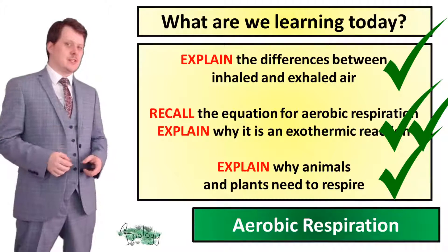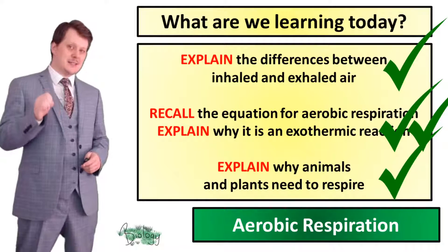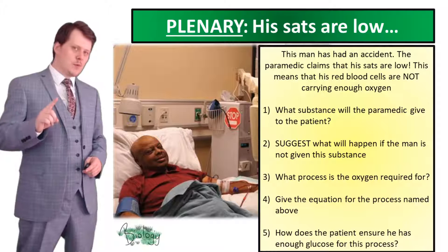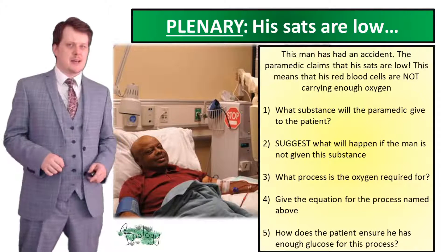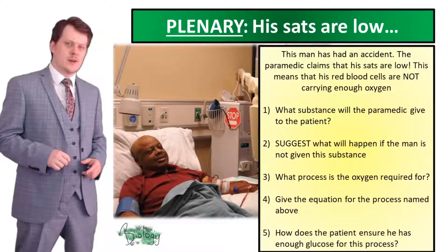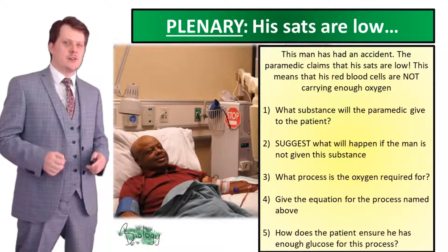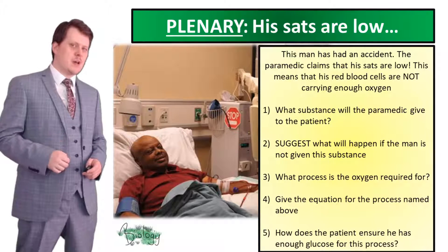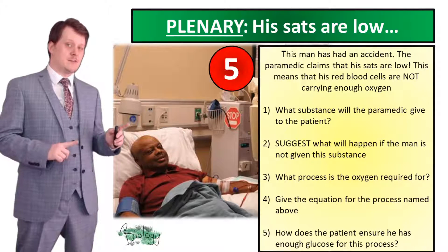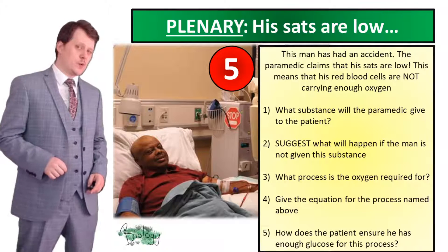So now we have further studied the equation for aerobic respiration and can state exactly where those two reactants come from. We've got one more thing to do before we wrap up. This man has had an accident and the paramedic claims that his sats are low, meaning his red blood cells are not carrying enough oxygen. Using this information and what we've learned today, answer these five questions. Pause the video if you need more time.